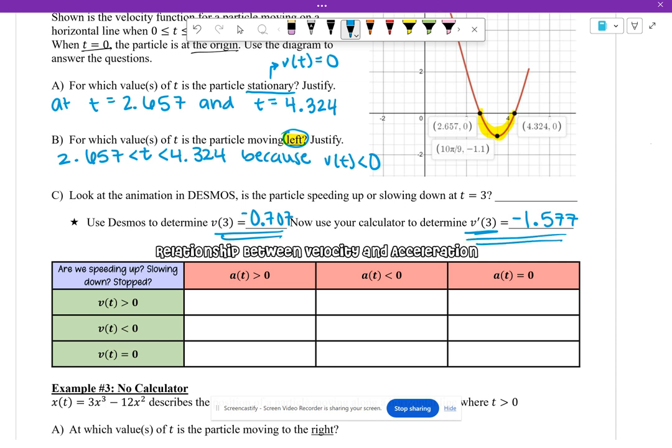And it tells us whether we're speeding up, slowing down, or whether we're completely stopped because the velocity at time t is negative. And because the acceleration, because if we remember the derivative of the velocity function gives us the acceleration. So this tells me velocity, this tells me acceleration because it's the derivative of the velocity.